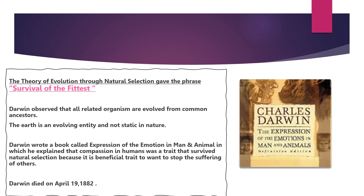Darwin observed that all related organisms are evolved from common ancestors. The Earth is an evolving entity and not static in nature. Darwin wrote a book called Expression of the Emotion in Man and Animal, in which he explained that compassion in humans was a trait that survived natural selection because it is a beneficial trait to want to stop the suffering of others. Darwin died on April 19th, 1882.